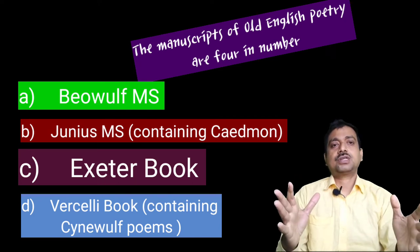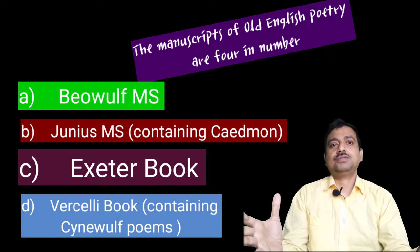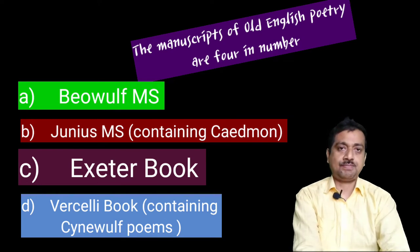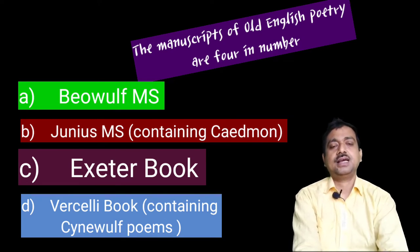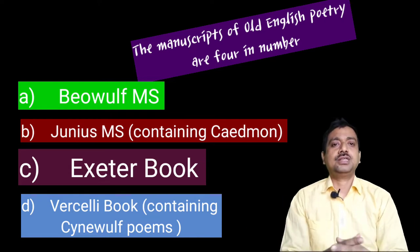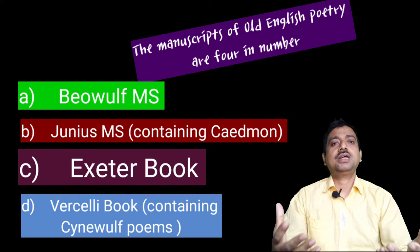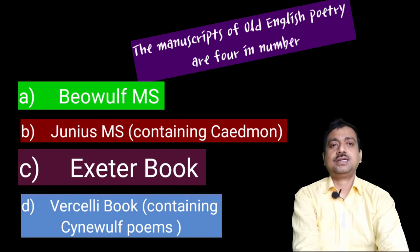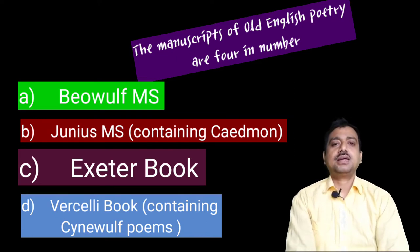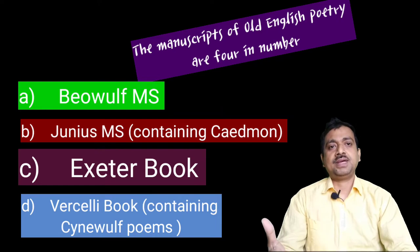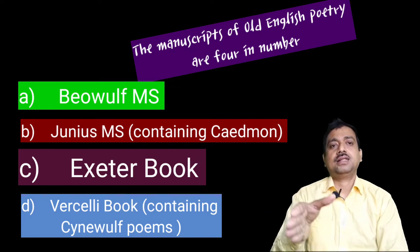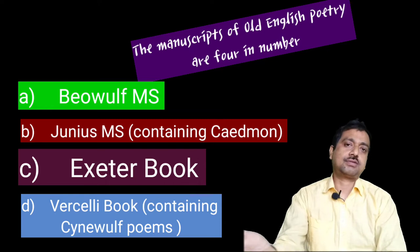Don't be confused about the volume and intricacies of Old English. The sources of Old English literature — the manuscripts of Old English poetry — are four in number. They are named after the locations where they were found. The first is popularly called the Beowulf MS.